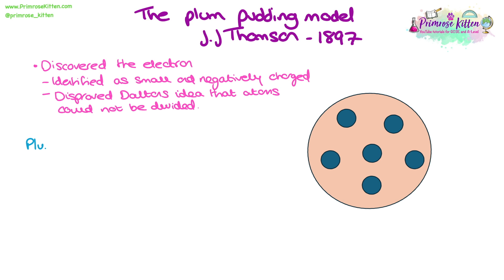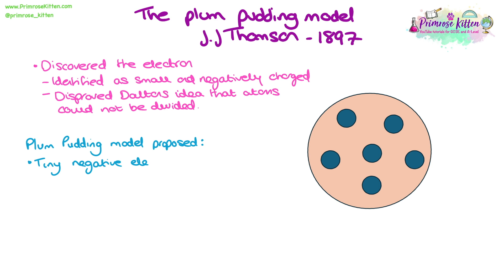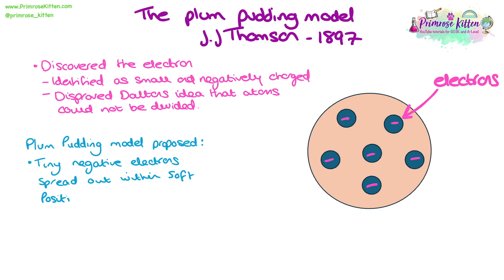The plum pudding model was a new and updated model for the atom, based on new facts learned since the billiard ball model. The main ideas included that there were tiny negatively charged particles called electrons spread out within soft positively charged material. This is where the model gets its name — the electrons act as the plums and the soft positively charged material acts as the pudding.